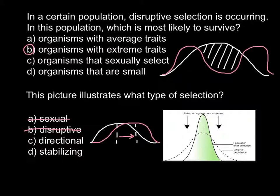We are left only with answer D: stabilizing selection. This is exactly what we see here. We lose the extremes because those genotypes are less adapted, while the intermediate genotypes are overrepresented because they are better adapted for the environment. So the correct answer here is D.